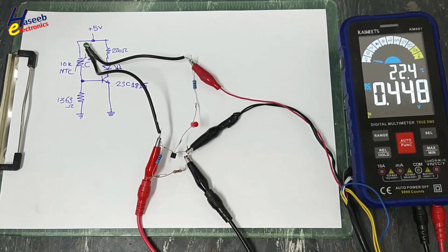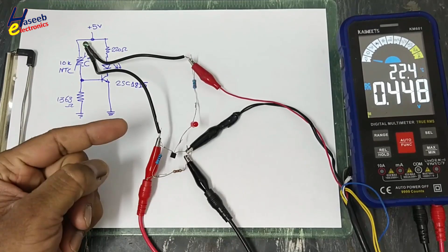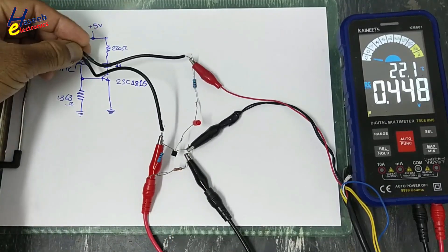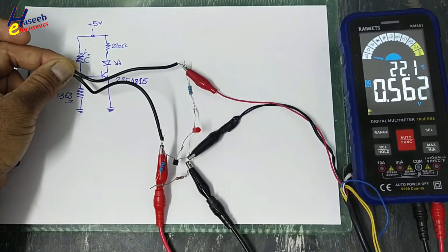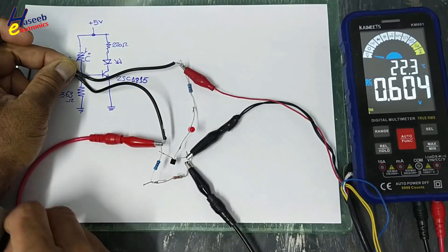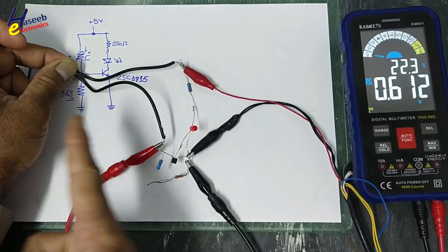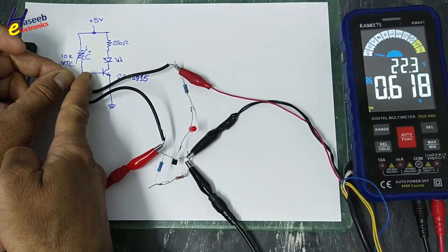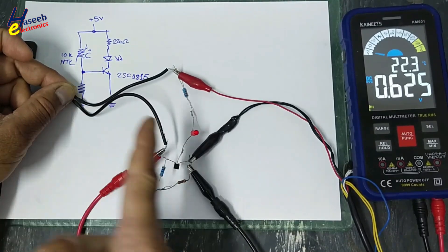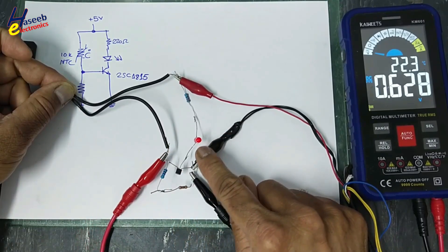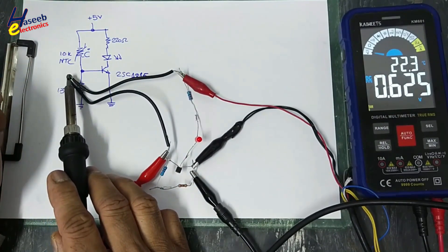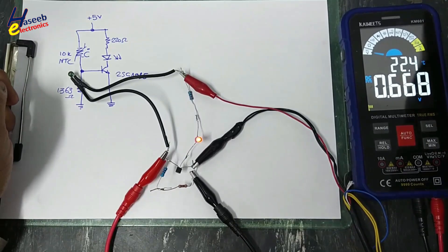Assalamu alaikum wa rahmatullahi wa barakatuhu, friends. Welcome back to my channel. In the last two videos we discussed this temperature monitor circuit. I used a 10 kilo ohm NTC, TTC-103-6D3. When temperature increases, its resistance decreases, so the voltage across the base increases. At this point the LED is turning on linearly — as temperature increases more and more, the LED becomes brighter.